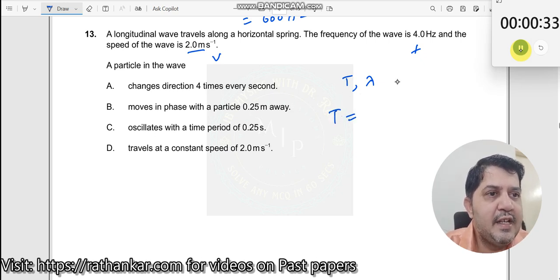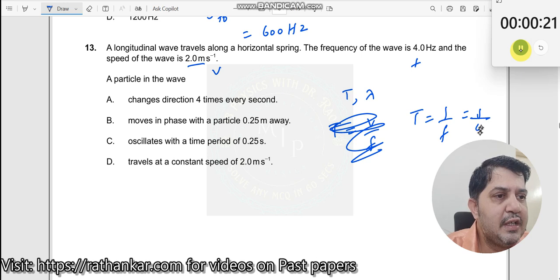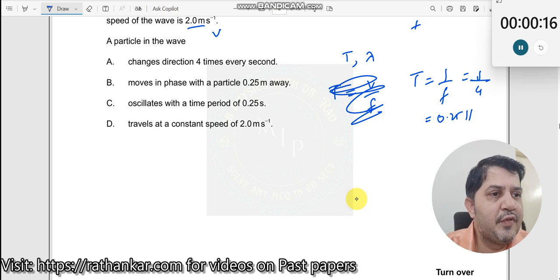What is the value of T? T is equal to V by F. Sorry, this is lambda over here. So T is equal to 1 by F. What is 1 by F? 1 by 4, which should now be equal to 0.25 hertz.